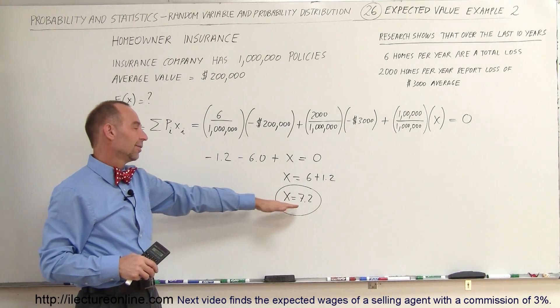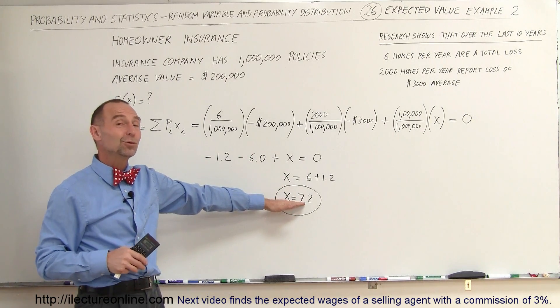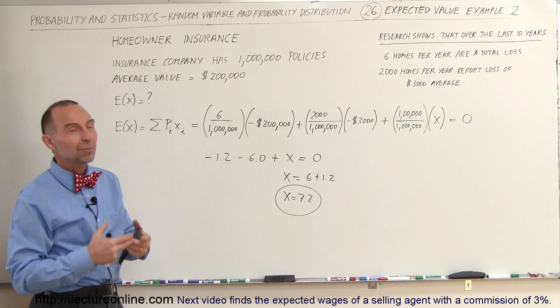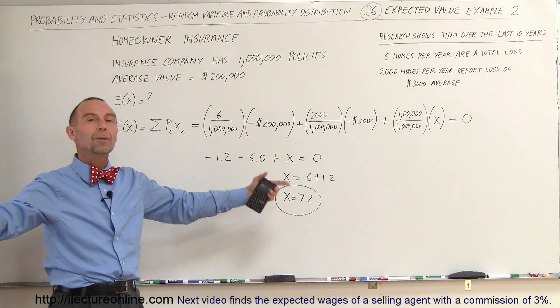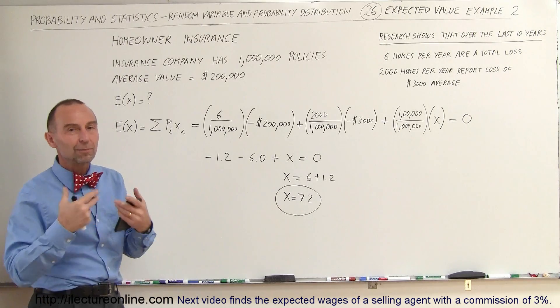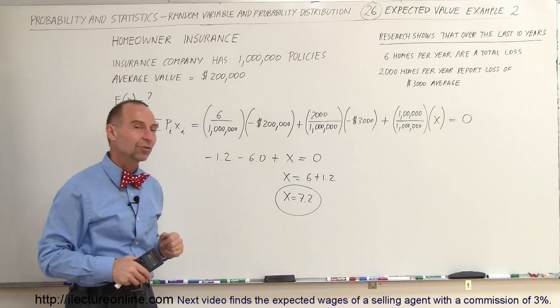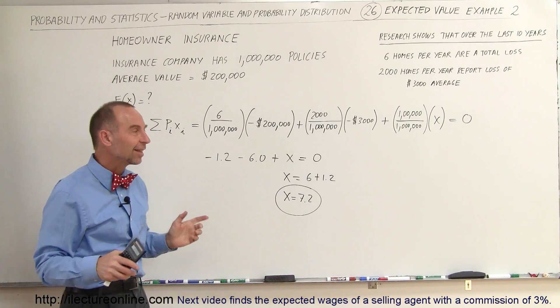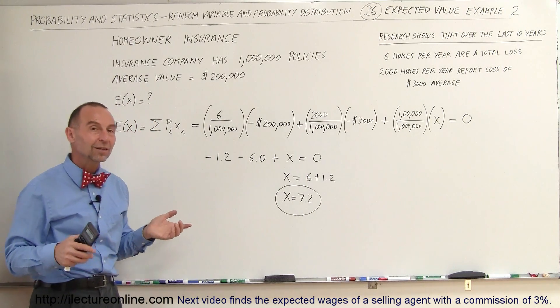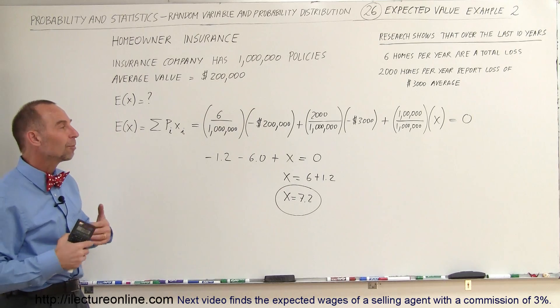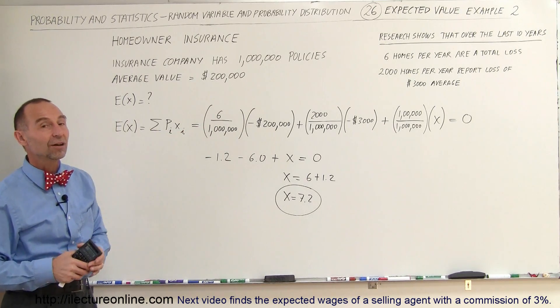Of course, we pay a lot more than $7.2 because they have to make a profit and they have an enormous company to run with all kinds of expensive employee wages and so forth. So the premiums are a lot larger than that. You can see that the damage claims tend to be relatively a small expense compared to having to pay for running the company itself.